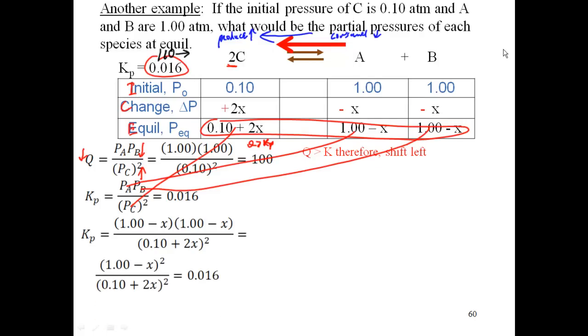I then get 1 minus x squared divided by 0.1 plus 2x squared, equal to 0.016. So here I'm trying to now solve for x, so I would have to use the quadratic formula, but since this is a perfect square, I got a square term over a square term I can get around the quadratic formula by taking the square root of both sides, since it's a perfect square. So I take the square root of both sides, and now I get 1 minus x divided by 0.1 plus 2x, is equal to 0.126.